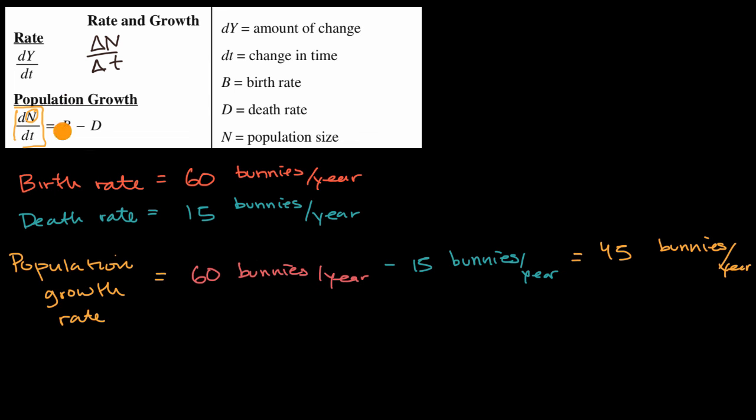It would be the difference between the birth rate, which is the letter B in this formula, and the death rate. The death rate is the letter D in this formula. You have it right over here. And that's exactly what we did over there. So it's all very intuitive.